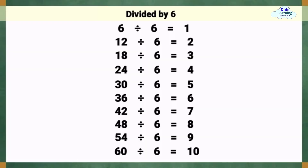Divided by 6. 6 divided by 6 equals 1. 12 divided by 6 equals 2. 18 divided by 6 equals 3. 24 divided by 6 equals 4. 30 divided by 6 equals 5.